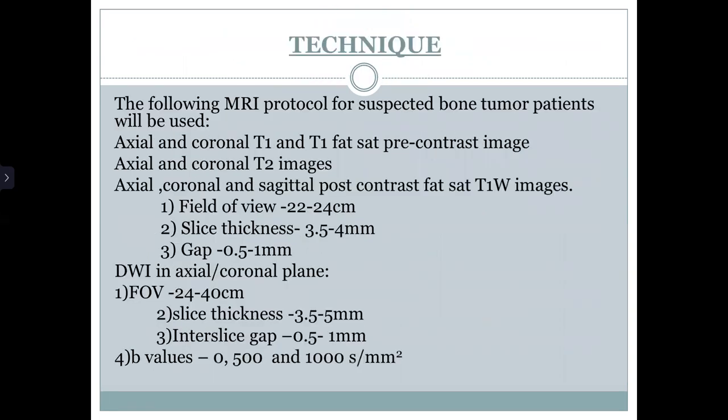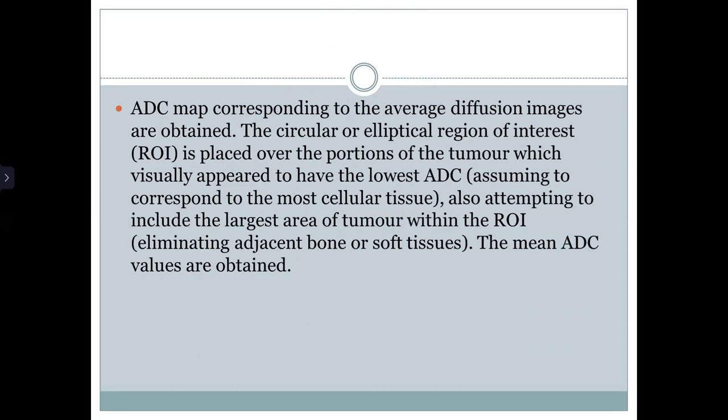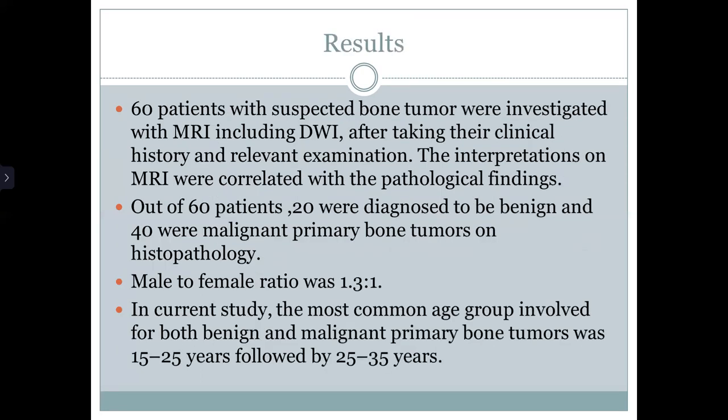Study duration is one year. DWI was performed either in axial or coronal plane with a slice thickness of 3.5mm and a gap of 0.1mm. ADC maps corresponding to the average diffusion images are obtained. The circular or elliptical region of interest is placed over the portion of the tumor which appears to have the lowest ADC, while also attempting to include the largest area of tumor within the ROI. The mean ADC values are then obtained.